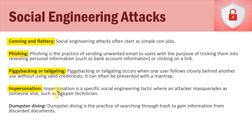A way to prevent piggybacking and tailgating is something called a man trap. A man trap is set up with two secure doors. You scan into the first door, and you cannot proceed to the second door until the first door is fully closed. So you go in, the first door closes, and you're in a hallway between the two doors — you must wait for the first door to close before proceeding. That's how a man trap mitigates the issue of piggybacking and tailgating.